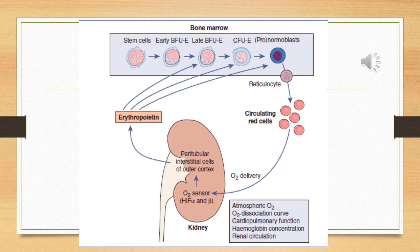After normoblast comes the reticulocyte stage. In the reticulocyte, a dense nucleus is not present — only small inclusions remain in the cell, which are remnants of the nucleus. After normoblast, when reticulocyte production occurs, the nucleus undergoes destruction, and a few granules or inclusions remain. Reticulocyte count helps in the diagnosis of many diseases. The reticulocyte then matures and the mature RBC enters into the blood to perform the function of oxygen and carbon dioxide transport.